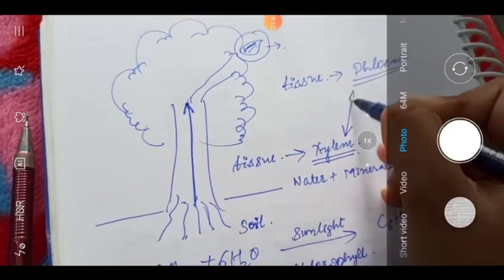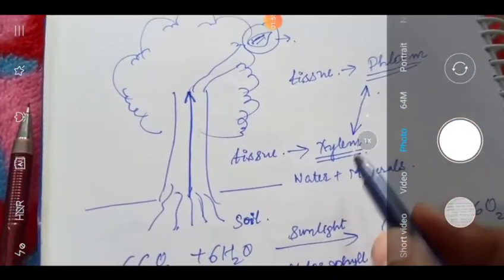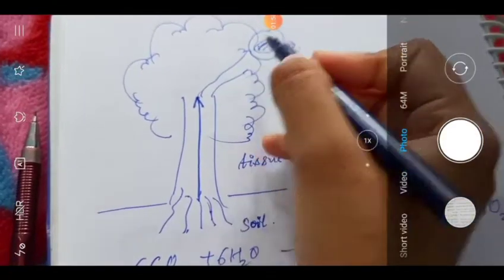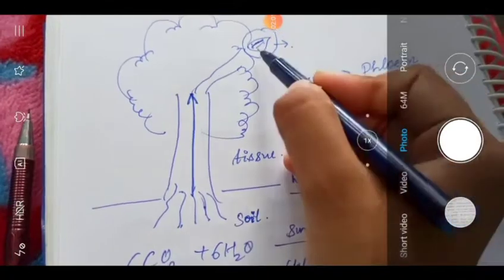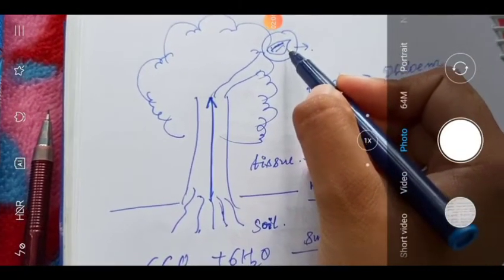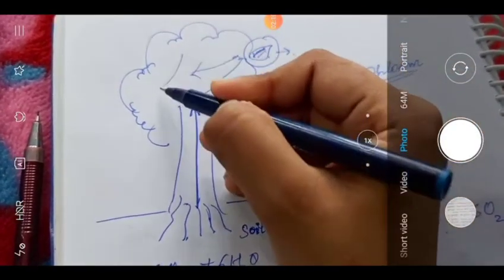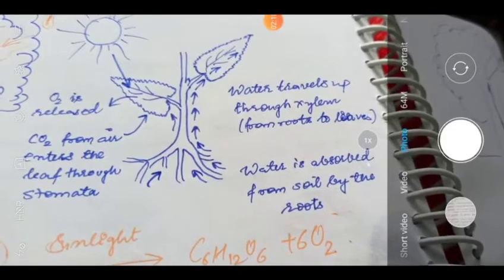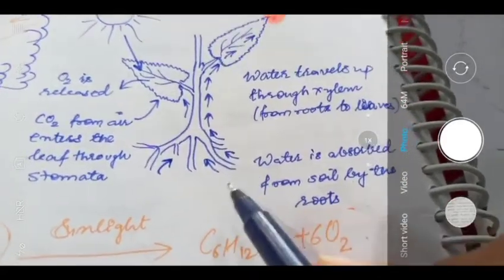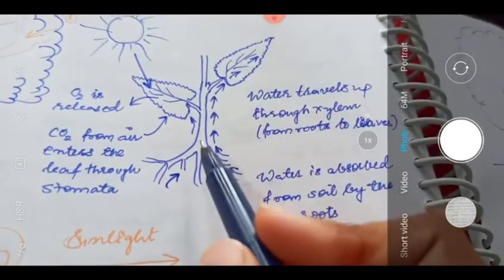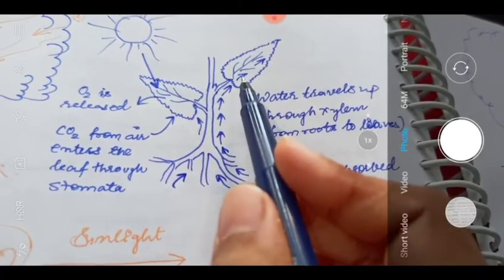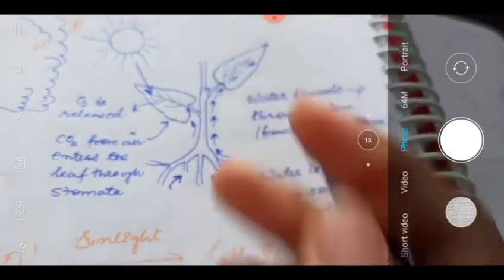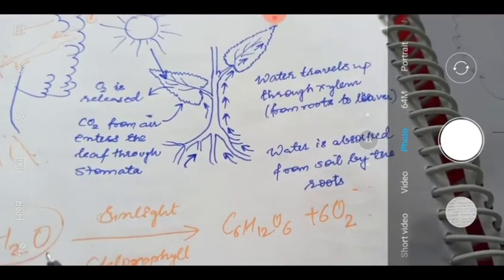The difference between xylem and phloem: xylem is the tissue that transports water and minerals from the roots to all parts of the plant up to the leaves. Phloem, on the other hand, transports the food prepared by photosynthesis from the leaves to all parts of the tree. Water is absorbed from the soil by the roots and travels upward to the leaves through xylem, where photosynthesis occurs.